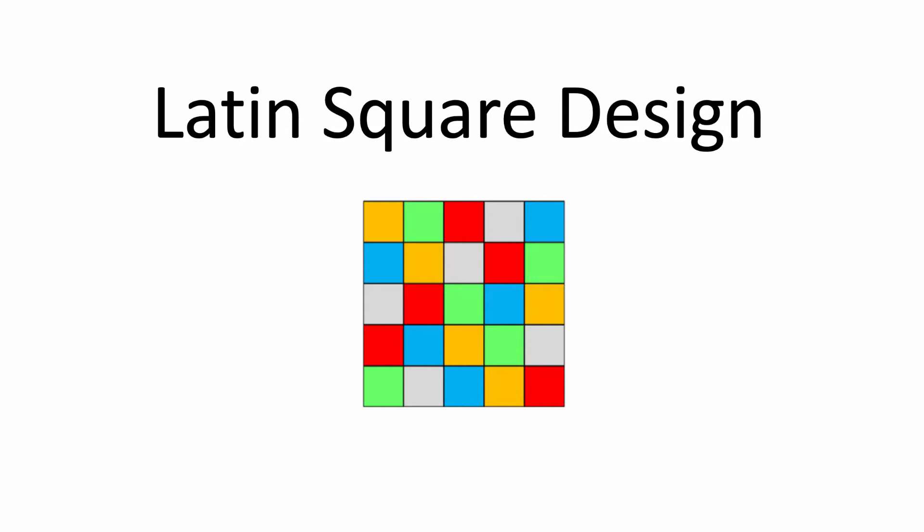In this video I want to talk about the Latin square design, which is a type of experimental design in statistics. I'm going to begin by going over some background, and then at the end of the video I will do an R demo for how you can analyze data using the Latin square design.